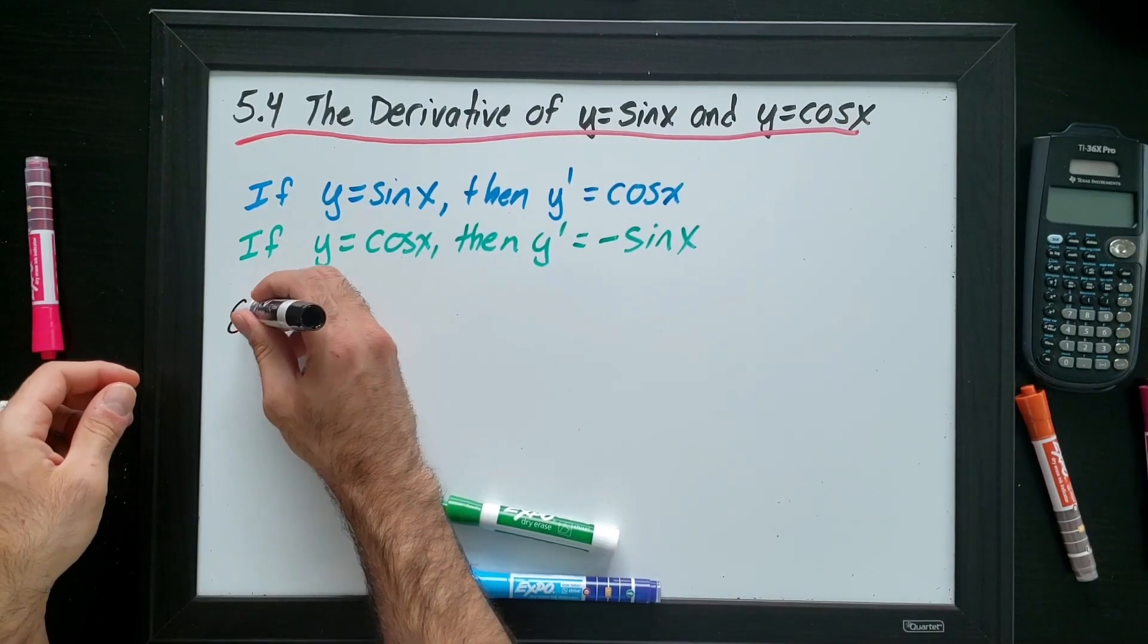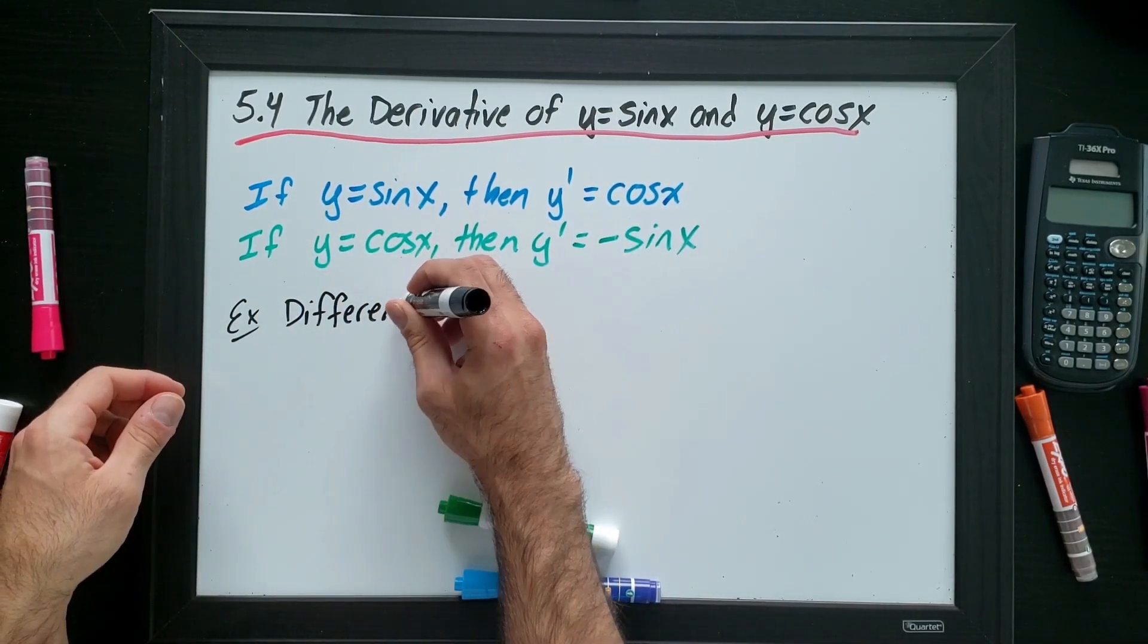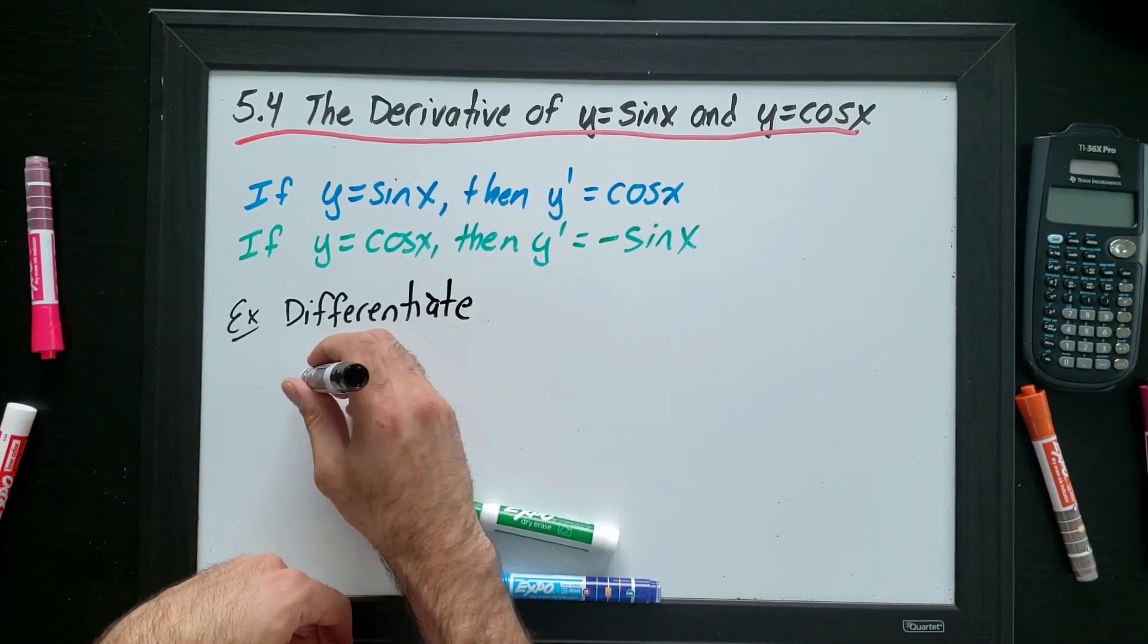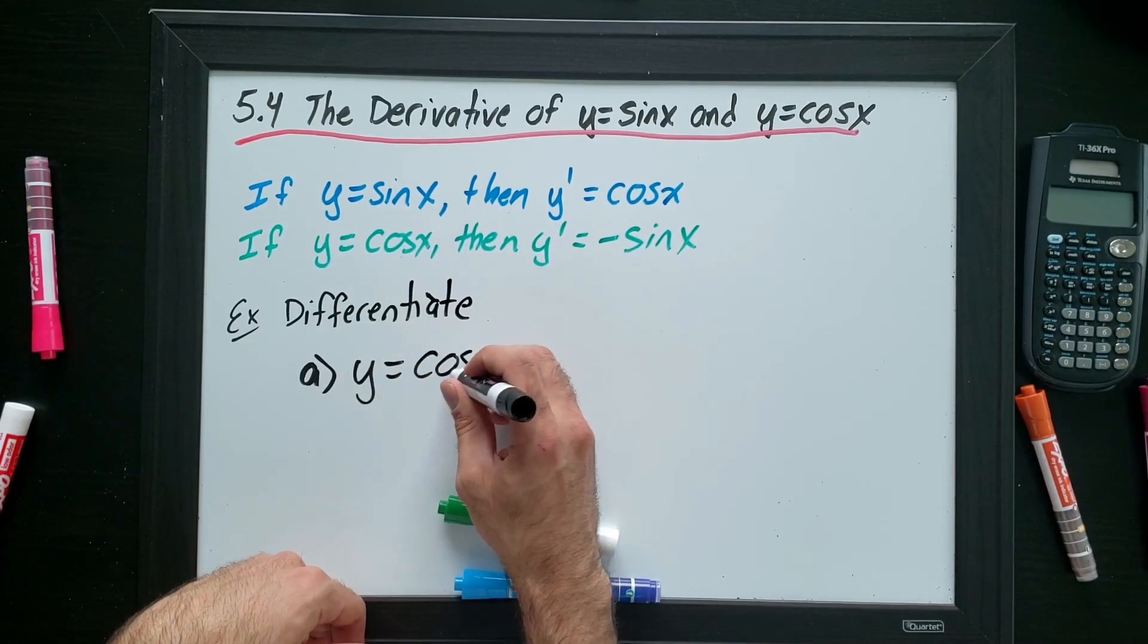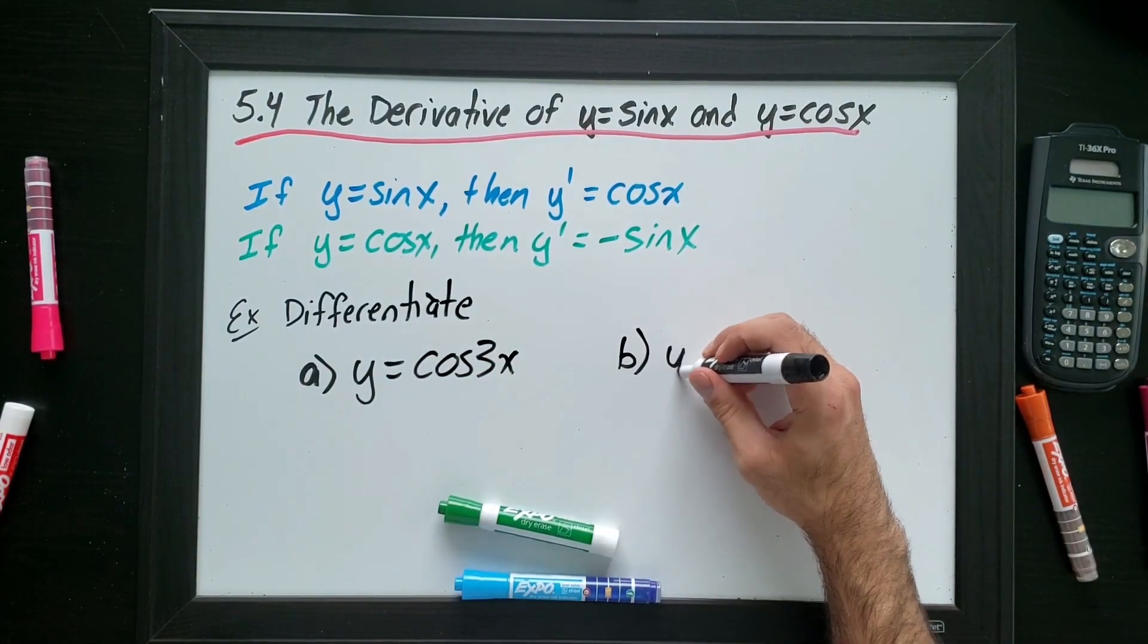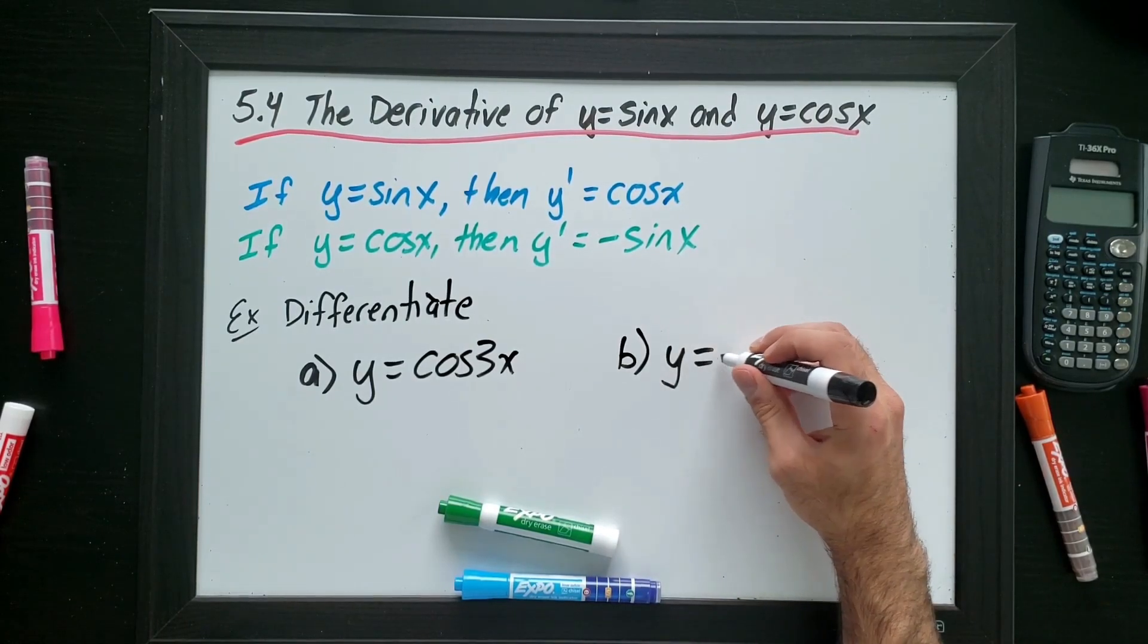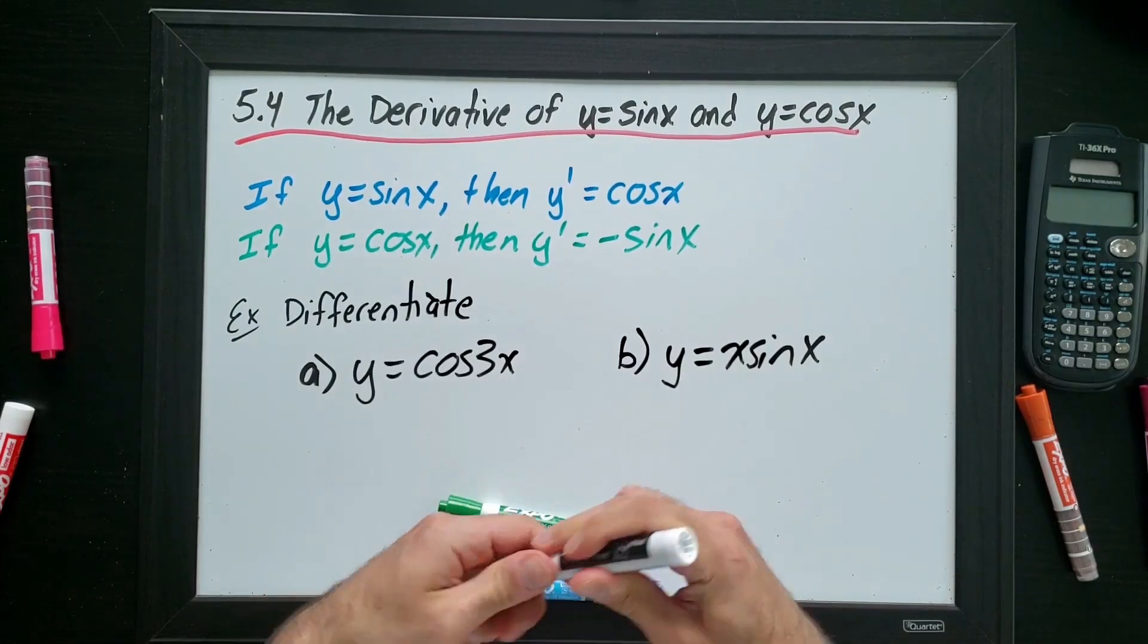I want to differentiate. Let's go with question A is going to be y equals cos 3x. And B is going to be x sine x. All right.